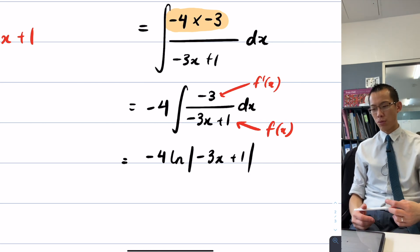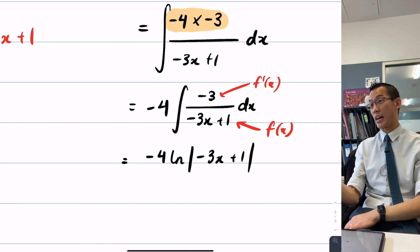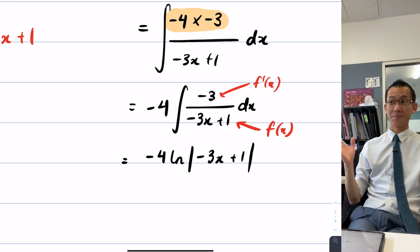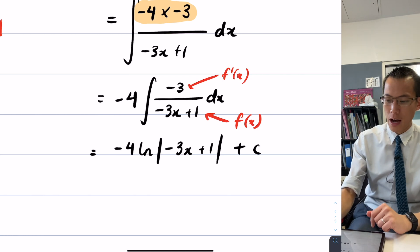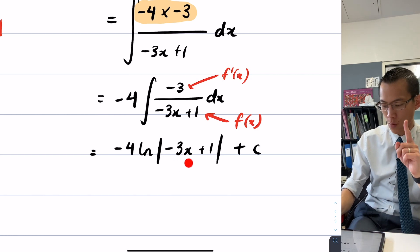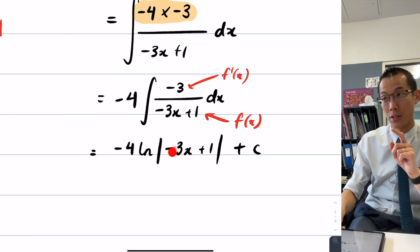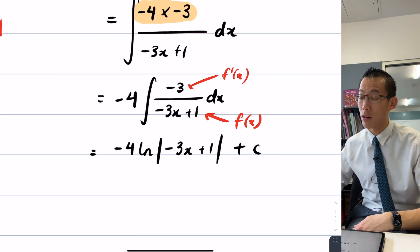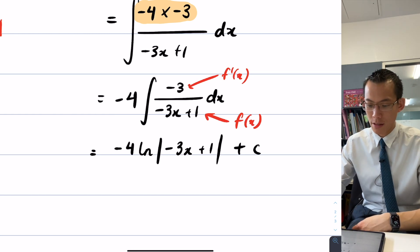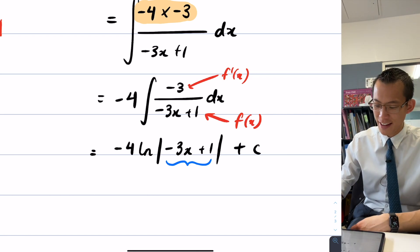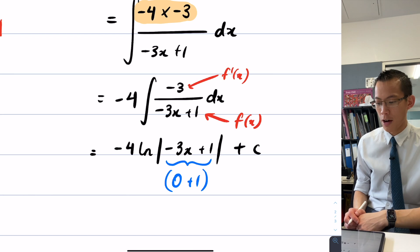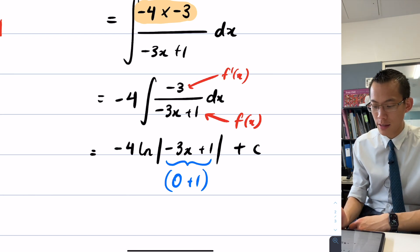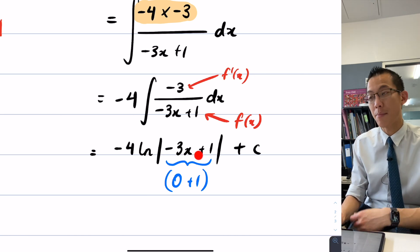We're not supposed to be able to put negative numbers inside logs because if you had your calculator and you were like, what's log of negative 1, it would just say error. Now the reason why this is okay is because this thing in here, we actually can change the value of x so that what you end up with is positive. So for example, if x was 0, you would get 0 plus 1. So you get log of 1 and that's fine. You can do log of any positive number.